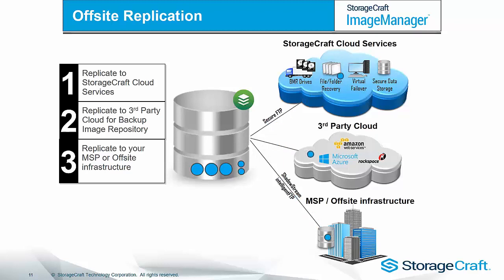Let's take a look at the off-site replication options included with the ShadowProtect solution. Firstly, you can replicate a copy of your backups to the StorageCraft cloud services for easy end-to-end disaster recovery failover. Secondly, you can replicate to public clouds for long-term archive, which is now even easier with the built-in S3 replication. And thirdly, you can replicate to your MSP or off-site infrastructure for archive and DR.